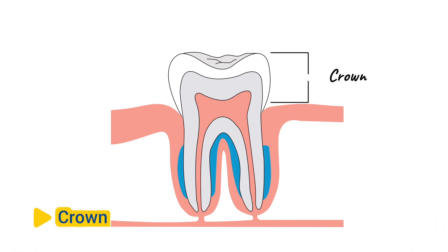Crown. The crown is the visible part of the tooth above the gum line. It is covered by enamel and is responsible for biting, chewing, and tearing food. The shape and size of the crown vary depending on the type of tooth and its function in the mouth.